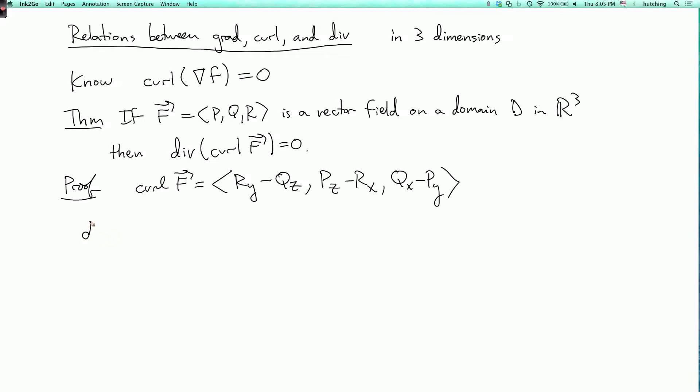If I take the divergence of this, I take the first term and differentiate it with respect to x, and then I add the second term differentiated with respect to y, and then the third term differentiated with respect to z. So this is r_yx minus q_zx plus p_zy minus r_xy plus q_xz minus p_yz. Now I see if I can cancel stuff.